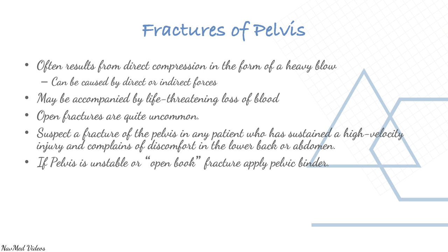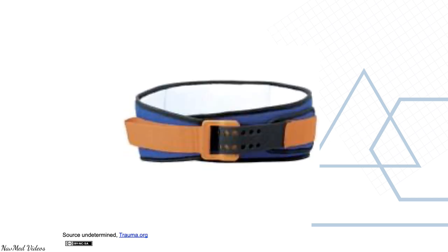If the pelvis is unstable — what we call an open book fracture — apply a pelvic binder. Pelvic fractures with severed blood vessels can bleed large amounts rapidly, and the pelvis can hold a large amount of blood. An open book fracture occurs when the right and left sides of the pelvis are separated at the front and rear. The pelvic binder is placed over the greater trochanters of the two femur bones and pulled tightly to secure the pelvis, helping to reduce bleeding and stabilize.